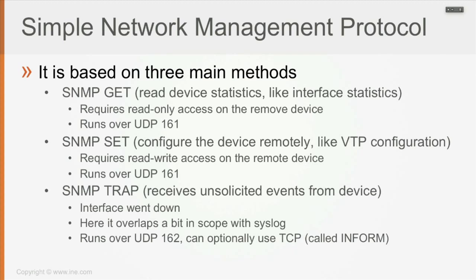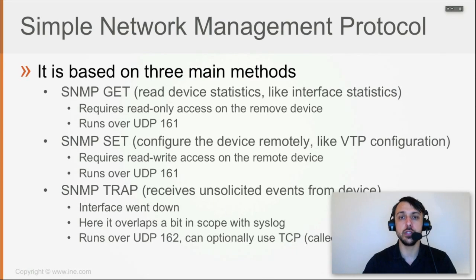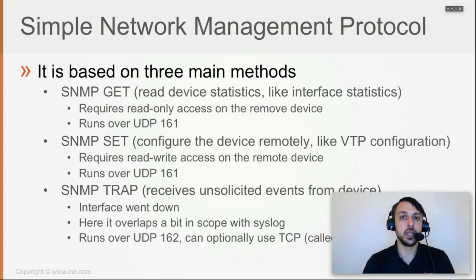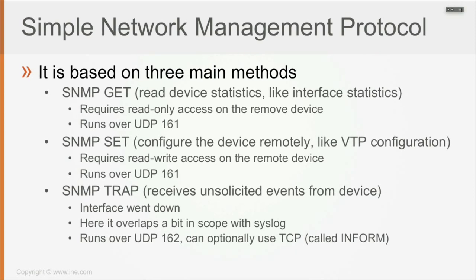The third method is the SNMP TRAP, where the SNMP manager receives unsolicited events from the SNMP agent — like, for example, an interface going down. From the trap's point of view, SNMP overlaps a bit with syslog, because when an interface goes up or down, a log message can also be sent remotely to a syslog server. This action runs over UDP 162 and is called a trap. It can optionally run over TCP, and in that case it's called an inform.